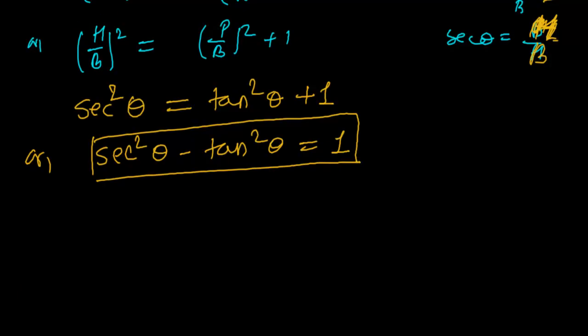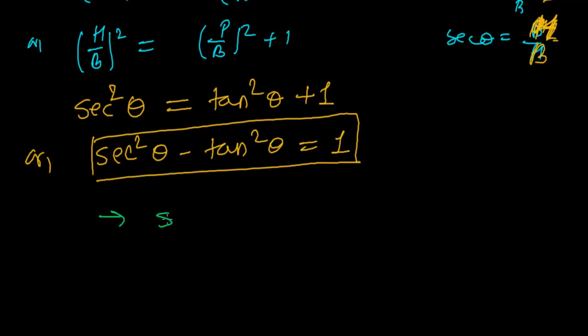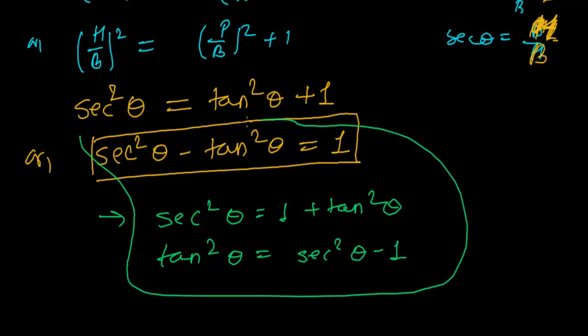And if you solve this further, you may get that sec²θ = 1 + tan²θ, and tan²θ = sec²θ - 1. So these all relationships are very, very important, and we'll be using them lots of times. So keep these all in mind. It's really important.